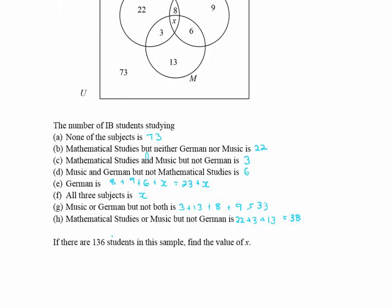If there are 136 students in the sample, the universal set equals 136. Adding everything up — X plus 8, 3, 22, 13, 6, 9, and 73 — must equal 136. Collecting like terms gives X + 134 = 136, so X = 2. That's how easy it is.